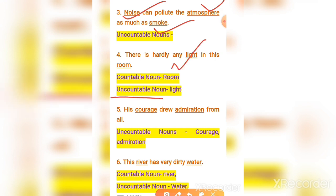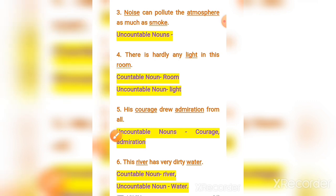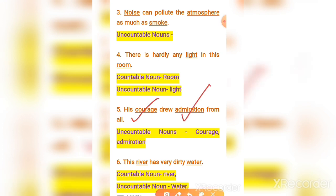The word 'room' is a countable noun. Number five: 'His courage drew admiration from all.' The words 'courage' and 'admiration' are both uncountable nouns. Number six: 'This river has very dirty water.' 'River' is countable and 'water' is uncountable.